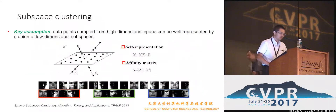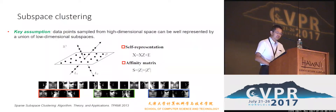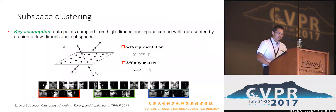For subspace clustering, there are several steps. The key one is learning the self-representation. Based on it, we can construct the affinity matrix and perform spectral clustering to obtain the final clustering result.